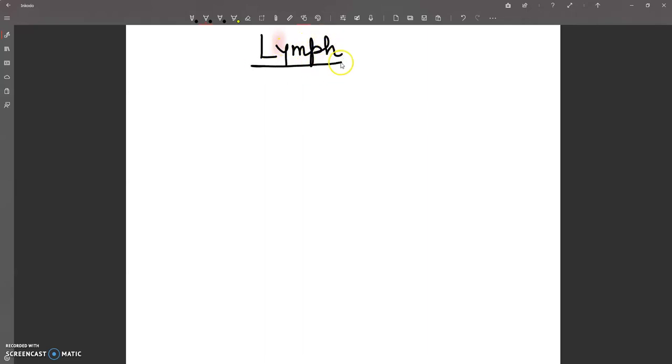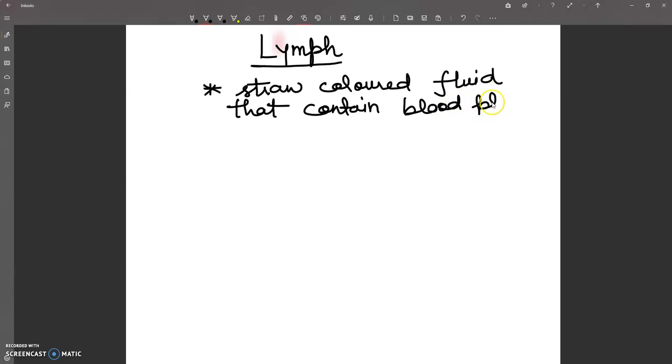Lymph is a straw colored fluid that contains blood plasma but without RBC, without platelets, and without plasma proteins. No RBCs are there, no platelets.